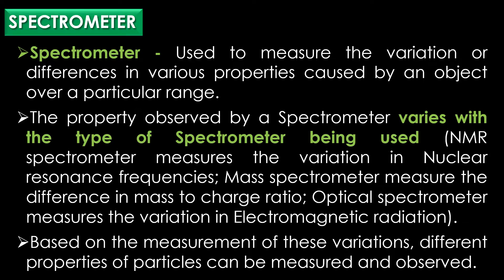For example, an NMR spectrometer measures the variation in nuclear resonance frequencies, a mass spectrometer measures the difference in mass-to-charge ratio, whereas an optical spectrometer measures the variations in electromagnetic radiation. Based on the measurement of these variations, different properties of particles can be measured and observed.